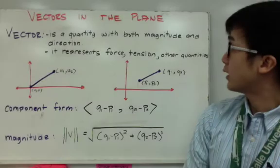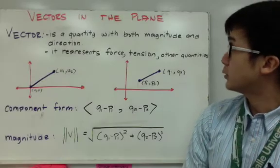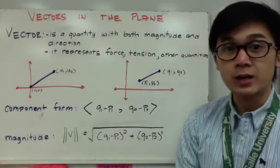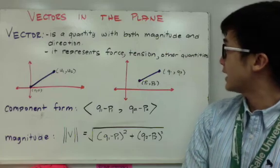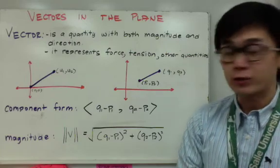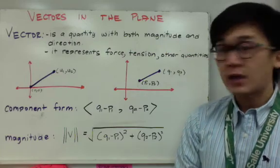Vectors, by definition, is a quantity with both magnitude and direction, and usually it represents force, tension, and other quantities.